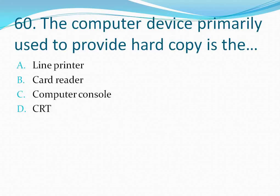Question number 60: The computer device primarily used to provide hard copy is the — your options are: option A line printer, option B card reader, option C computer console, option D CRT. The computer device primarily used to provide hard copy is the line printer, so the correct answer is option A.